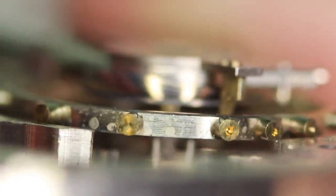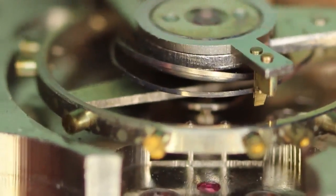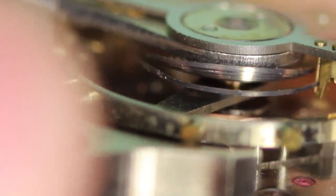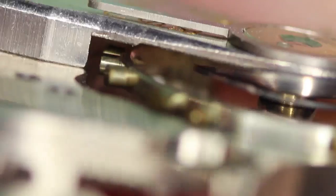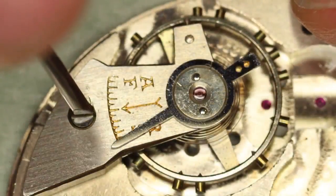And here it is mounted on the balance. As you can see, the coils are touching the balance cock. And of course, this watch would not run.